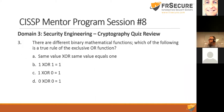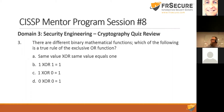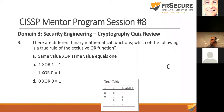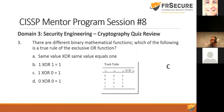There are different binary mathematical functions. Which of the following is a true rule of the exclusive OR function? Same value XOR same value equals 1? 1 XOR 1 equals 1? 1 XOR 0 equals 1? 0 XOR 0 equals 1? You can tell that A, B, and D are basically the same answer. C is true. And there's our truth table — you'll need to memorize that. If the values are the same, it's a 0; if they're different, it's a 1.